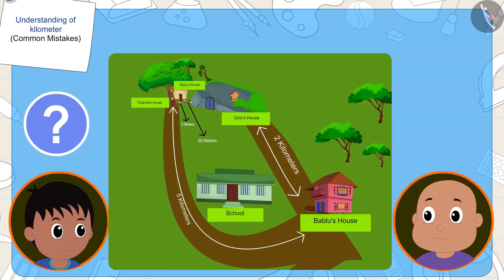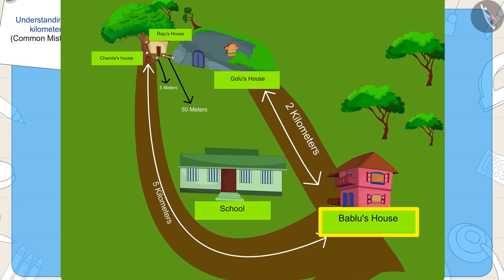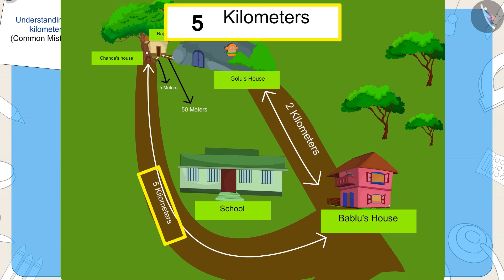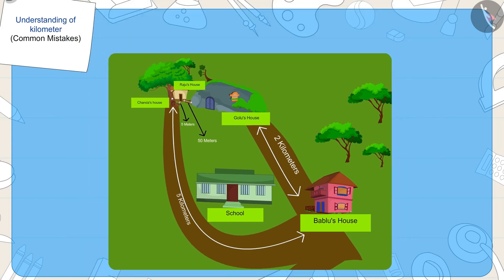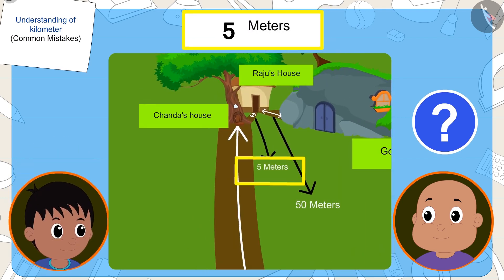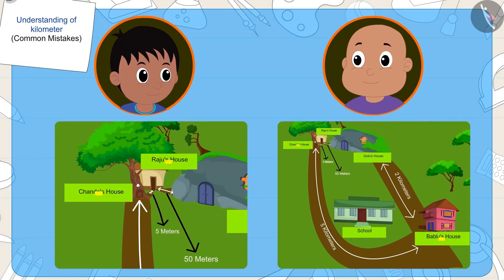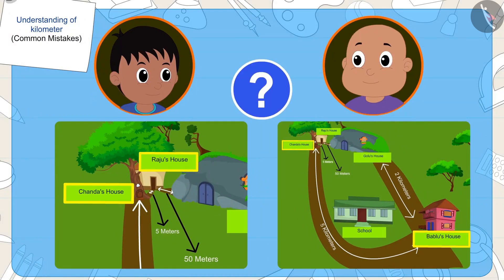Raju asks Bablu how far his house is from Chanda's house. Bablu tells him that his house is five kilometers away from Chanda's house. Then Bablu asks Raju how far his house is, and Raju says five meters. Children, can you tell me — is that right?